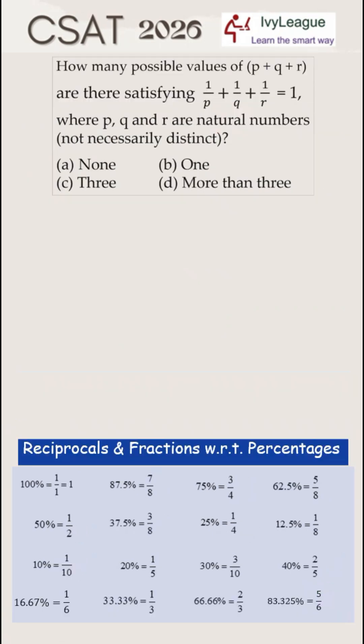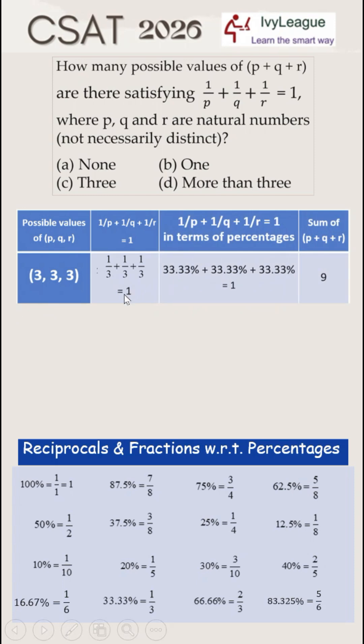If 1 upon 3 plus 1 upon 3 plus 1 upon 3 is equal to 1, then P, Q and R have the same value of 3. Hence sum of P plus Q plus R will be 9.